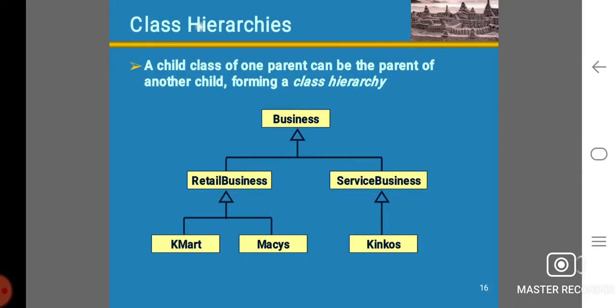A child class of one parent can be a parent of another child, forming a class hierarchy. Consider this diagram: Business is derived into two child classes, RetailBusiness and ServiceBusiness.